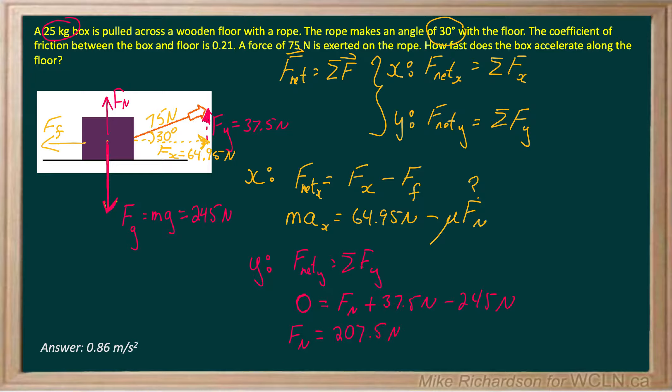So that'll allow me to finish my equation above. Now that I know my normal force, I can put it in up here and finish the equation and solve for a. So let's do that. So we've got 64.95 minus my coefficient of friction, which is given as 0.21, times my normal force, which we've established to be 207.5 newtons.